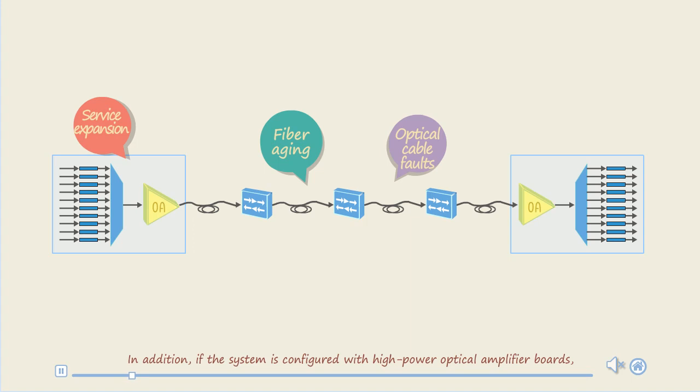In addition, if the system is configured with high-power optical amplifier boards, such as Raman boards, the laser radiation exposed in case of a fiber cut may cause body injuries to maintenance personnel.